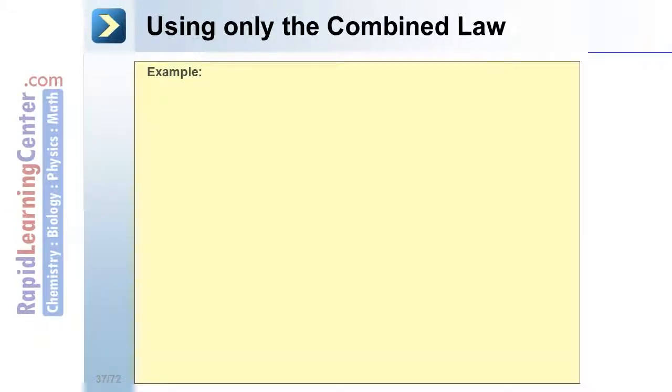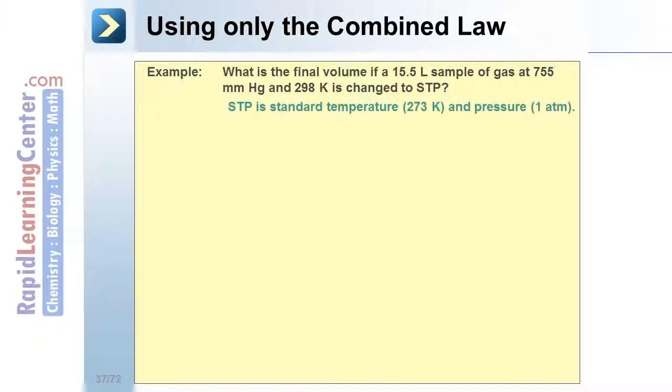Watch an example of how to use the combined gas law to solve a problem when something is held constant. Remember, STP is hidden information. We have our original pressure and original volume, and finally, the original temperature. We know the final pressure is standard. We're looking for the final volume. And we know the final temperature is standard.